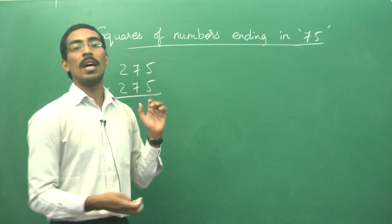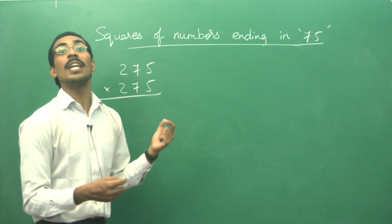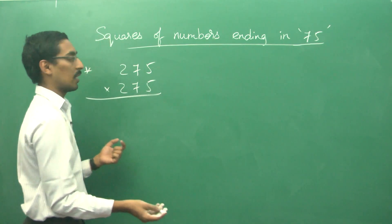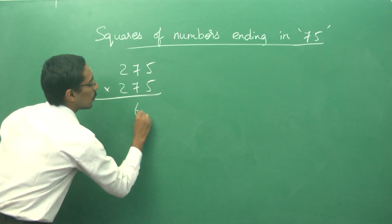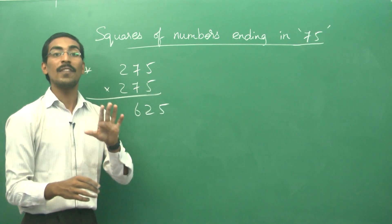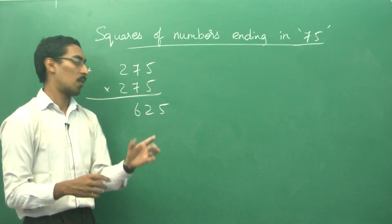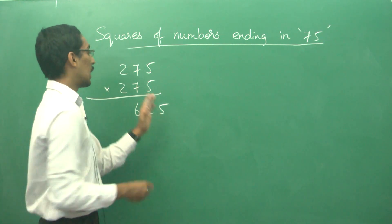So don't do that. Now what you do is follow very similar to our squares of numbers ending in 25. For 75, remove it and just write 625. 625 is 25 square, that will be the last three digits always.